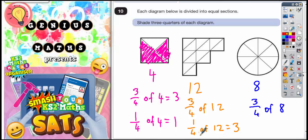So if 1 quarter of 12 is 3, you want 3 of those. So you want 3 lots of 3. Well 3 lots of 3 is 9. So 3 quarters of 12 must be 9. So you've got to shade in 9 little triangles on this shape. Doesn't matter which 9. It can be any 9 as long as it is exactly 9.